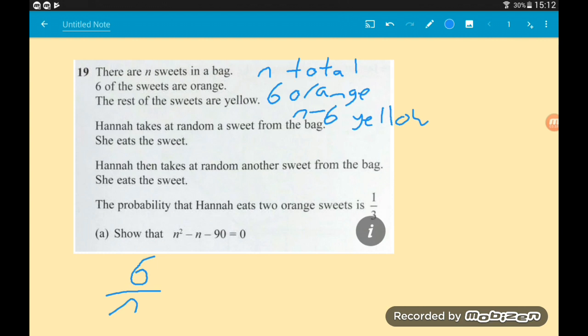Then the probability of picking another orange sweet, well there's going to be one less orange. So six minus one is five. There's also one less sweet overall. So we've got five over n minus one. Now that might look completely useless to us at the moment. The reason we're multiplying these probabilities is, remember, with successive events, you do just that.